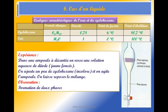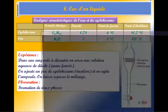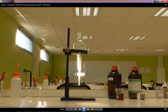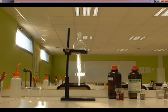Expérience : Dans une ampoule à décanter, on verse une solution aqueuse de diiode — solution jaune ou brune — on ajoute un peu de cyclohexane incolore et on agite l'ampoule. On laisse reposer le mélange. Observation : Formation de deux phases. L'ampoule à décanter est l'instrument de verre qui permet d'effectuer une extraction liquide-liquide, c'est-à-dire faire passer une espèce chimique d'un solvant dans un autre solvant.